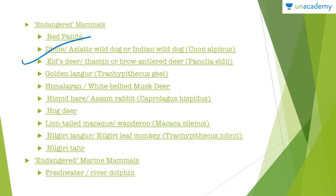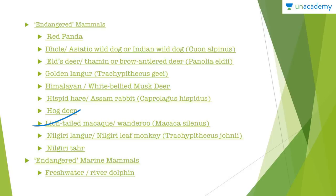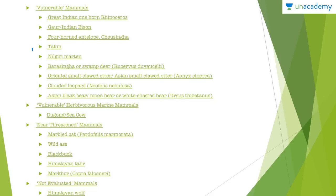For endangered mammals, the red panda, dhole, Himalayan white-bellied musk deer, hog deer, and lion-tailed macaque are listed. Questions do come from this, so read about these animals — where they are found and their distribution patterns. For endangered marine mammals, the Gangetic river dolphin, also known as Platanista gangetica, is important. For vulnerable mammals, key species include the Indian bison and the Indian one-horned rhinoceros, which has been much in the news in connection with Kaziranga National Park.